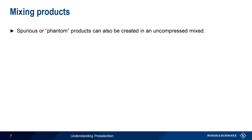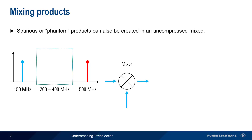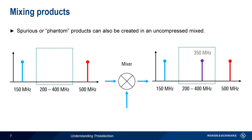Spurious signals can also occur due to the mixing of products in an uncompressed mixer. A mixer, by its very nature, is designed to produce the sum and difference products of two input signals. Normally this mixing occurs between the input signal and the local oscillator, but a combination of two or more signals at the input can also lead to mixing products. For example, if we look at a span of 200 to 400 MHz, we don't see any signals, including those at 150 and 500 MHz. However, when these signals pass through a mixer, the two tones will combine and a tone will appear at 350 MHz — the difference frequency — even though no such tone was present at the input of the instrument.